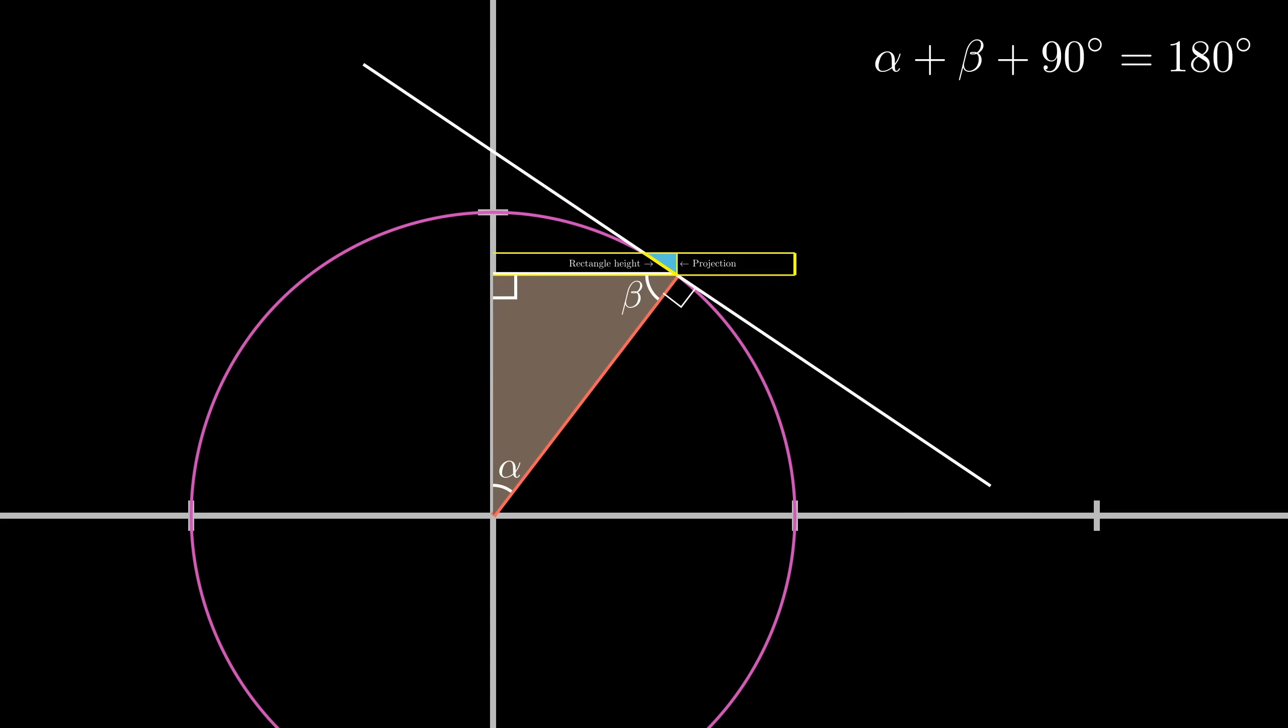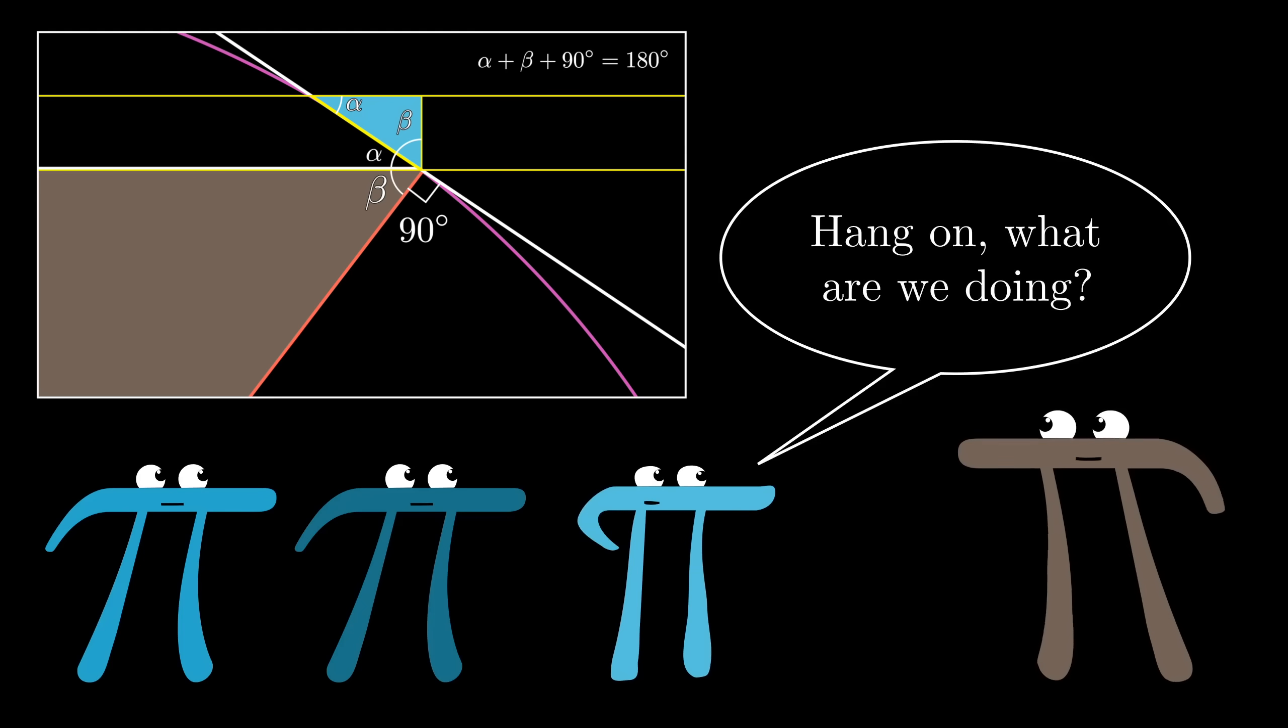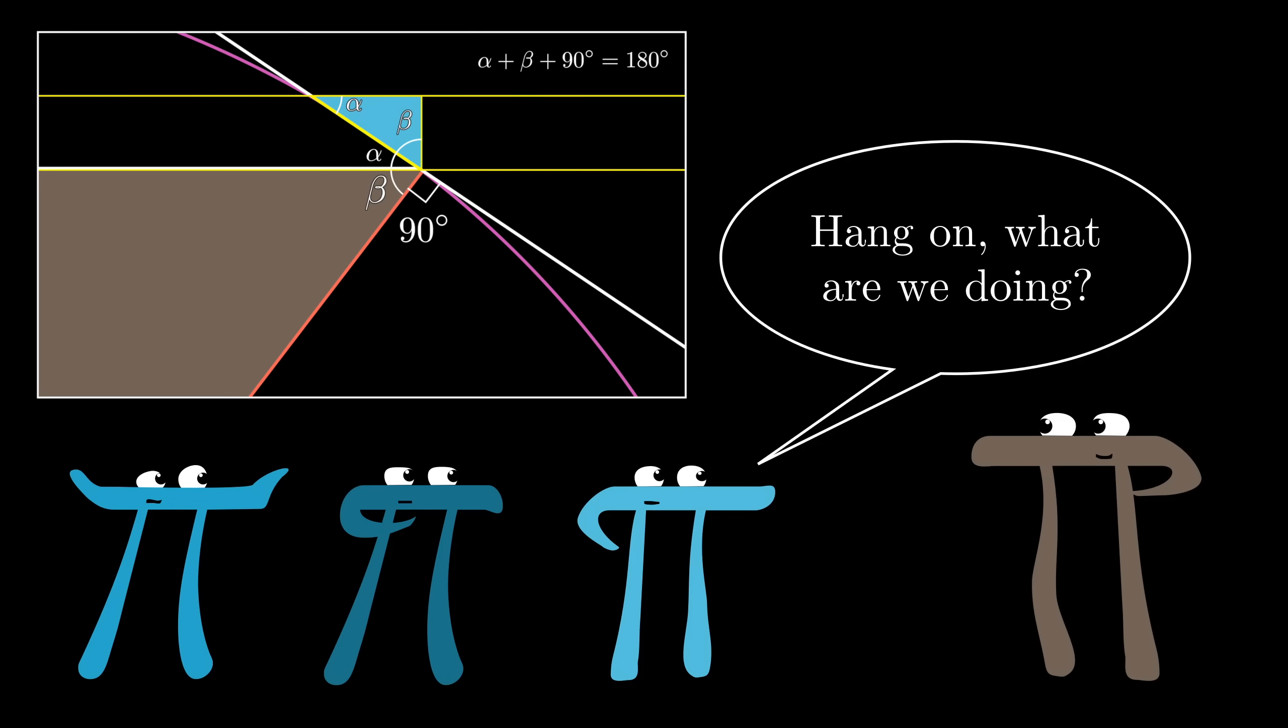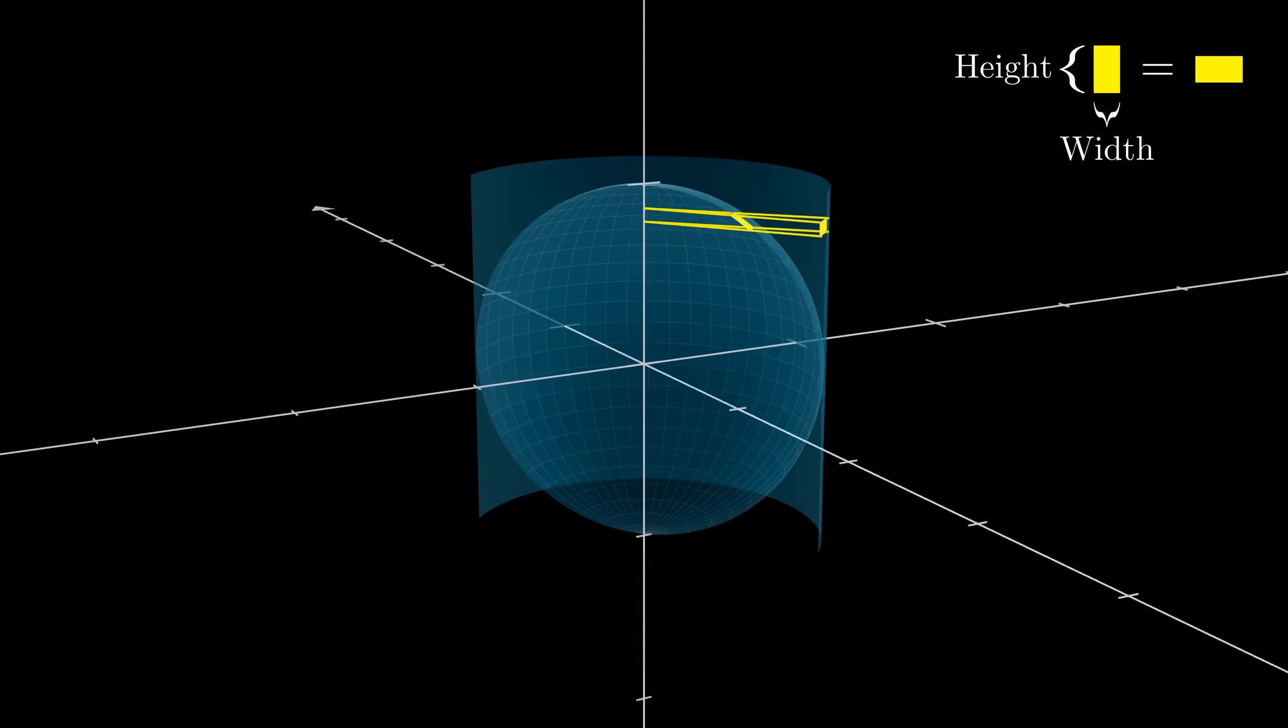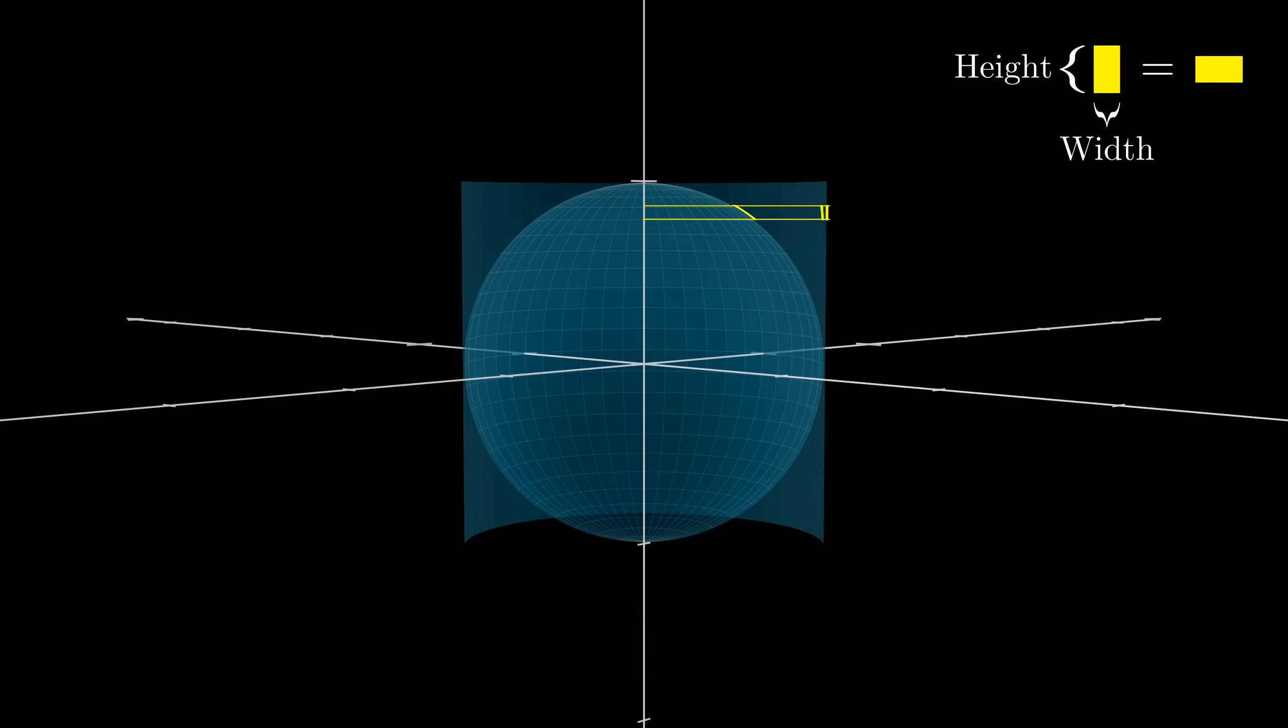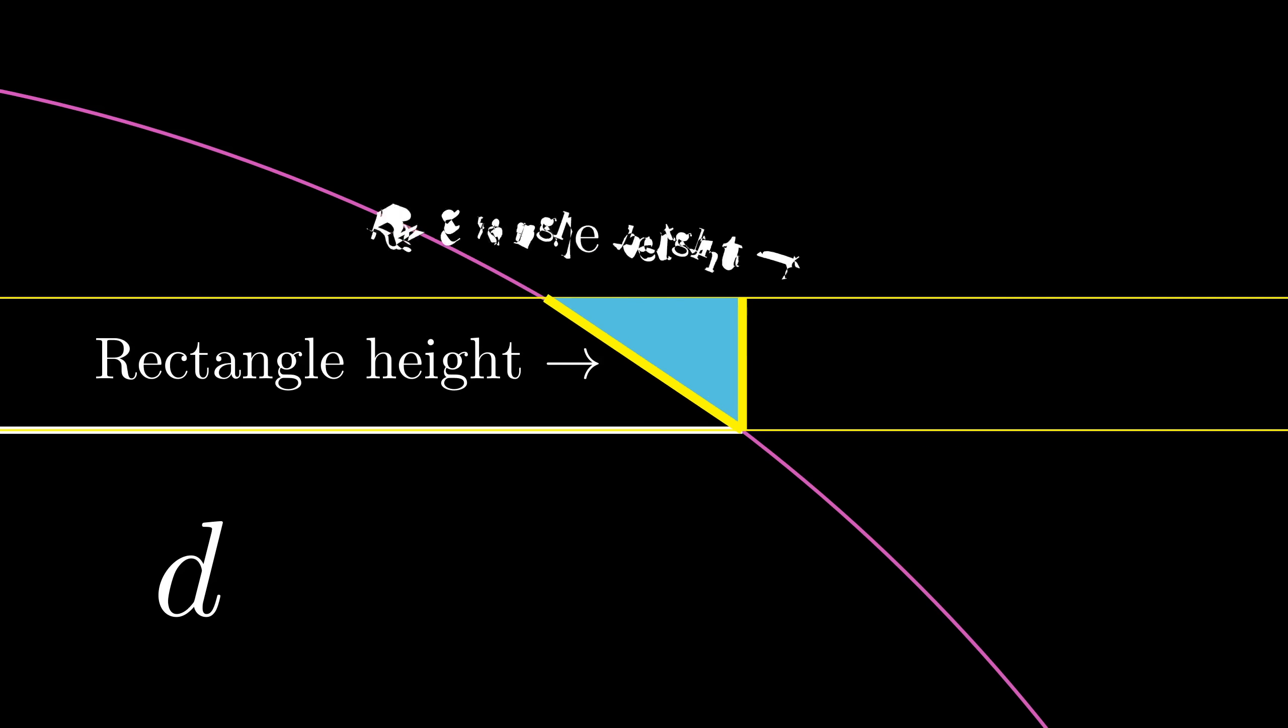Deep in the weeds like this, it's sometimes easy to forget why we're doing this. Remember, what we want to know is how much the height of the sphere rectangle gets squished down as we project it out. And that's the ratio of this little hypotenuse to the leg on the right side.